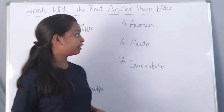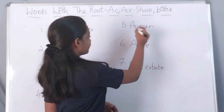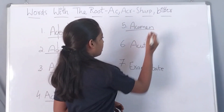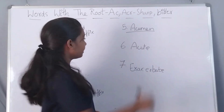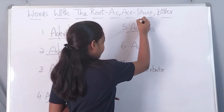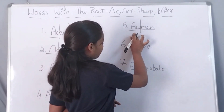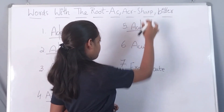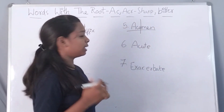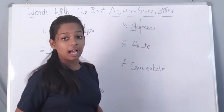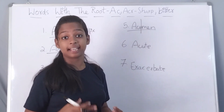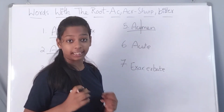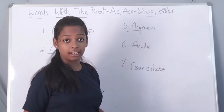The fifth word for today is acumen. Acumen has one root word in it which is ACUE, meaning sharp. So the word means the ability to understand and decide things quickly and well.